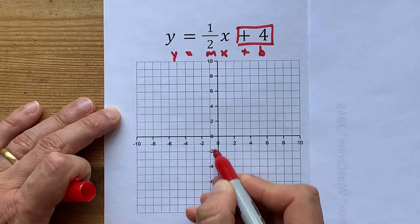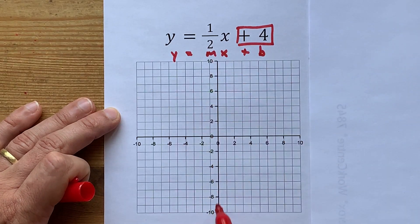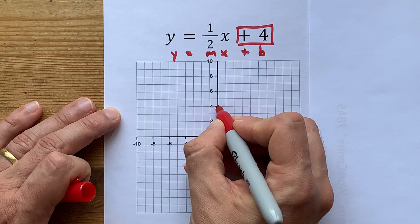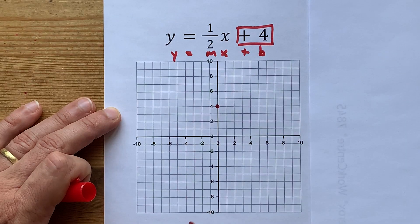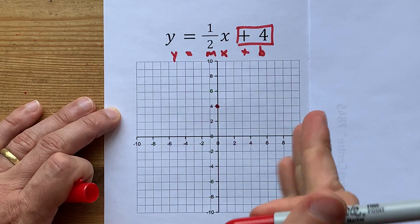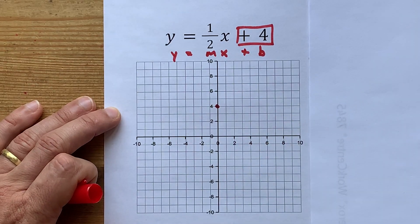So along the y-axis — that's the up-down axis — I want you to put a dot at 4. That's our starting point.